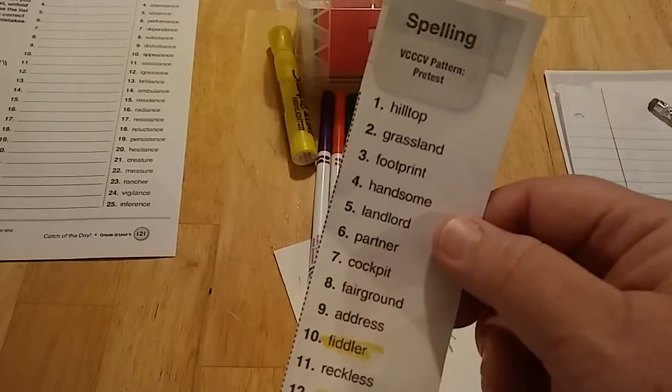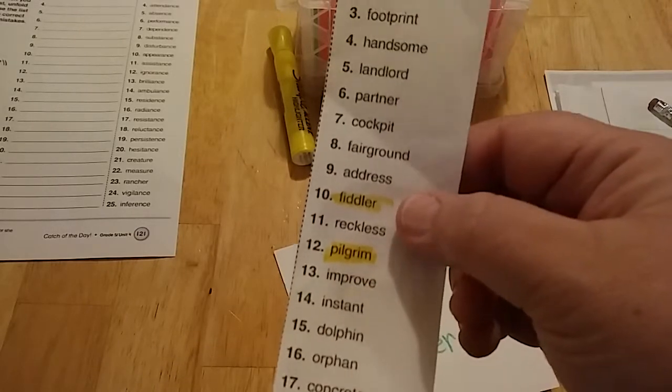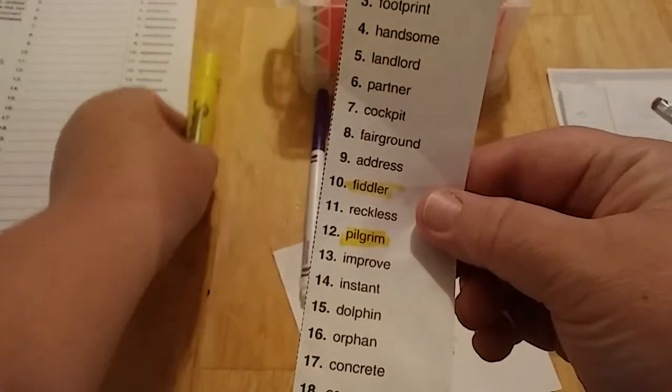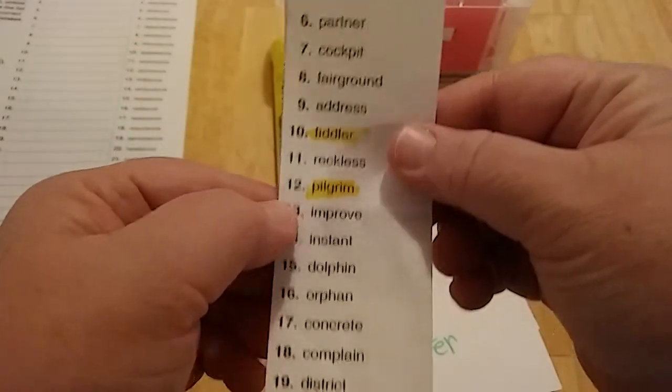So what I do is as she misses words, I take a yellow highlighter and just go ahead and highlight any words that she's missed.